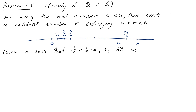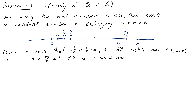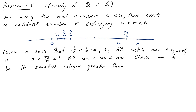Notice the inequality a < m/n < b is equivalent to an < m < bn. This gives us a clue as to what m should be: we choose m to be the smallest integer greater than an. We have already fixed n; now we just need to show that m < bn.